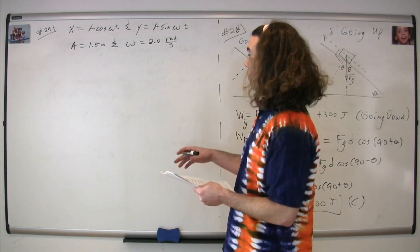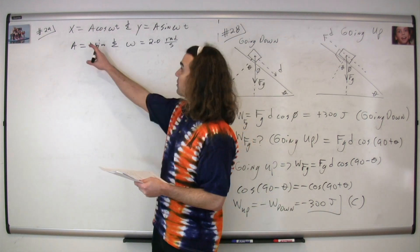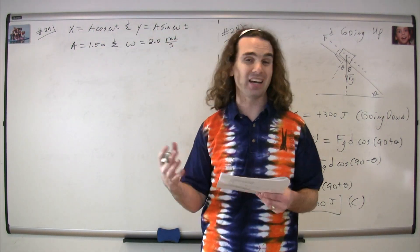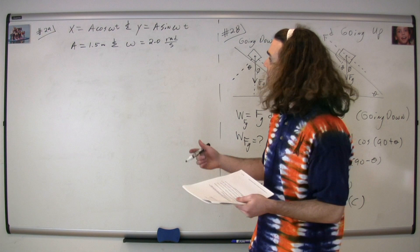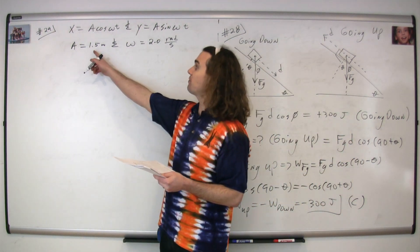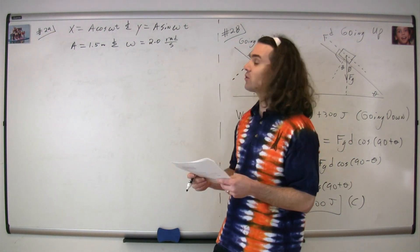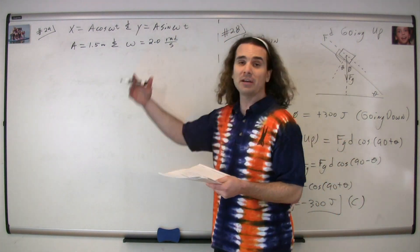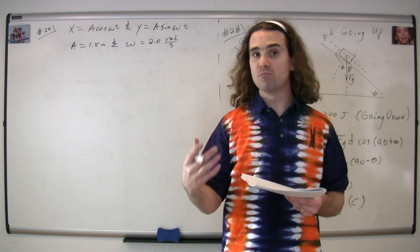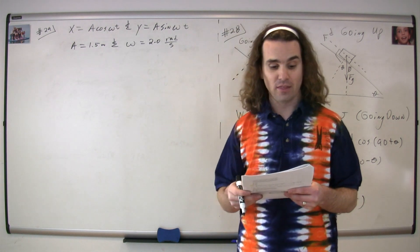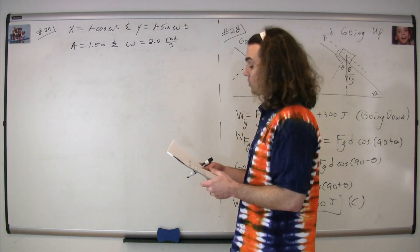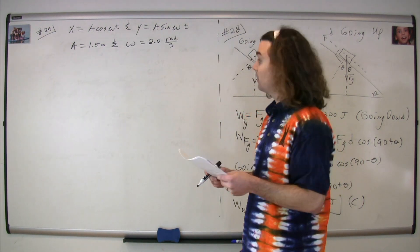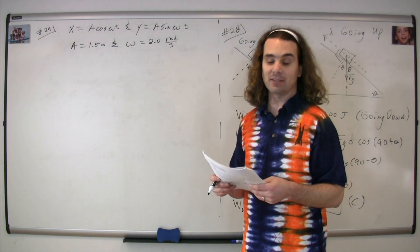Question 29 gives us the equations for the x position and y position as a function of time for an object moving in an xy plane, with values a = 1.5 meters and omega = 2.0 radians per second. These are the equations that describe an object moving in a circle, where a is the radius of the circle and omega is the angular velocity.